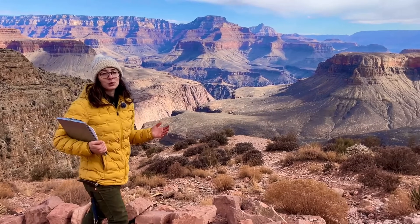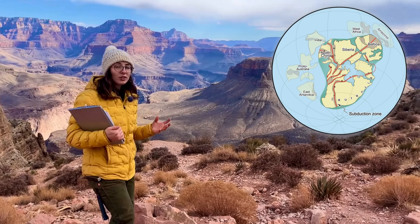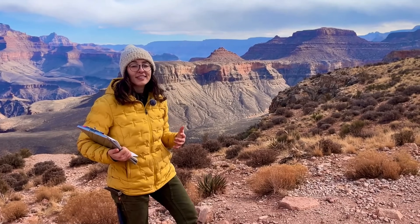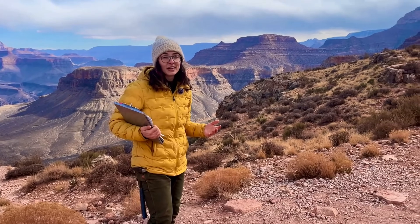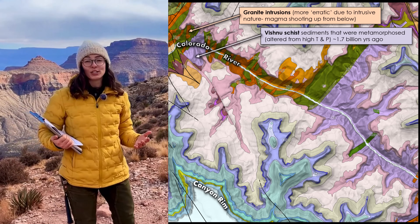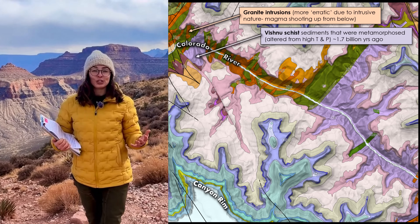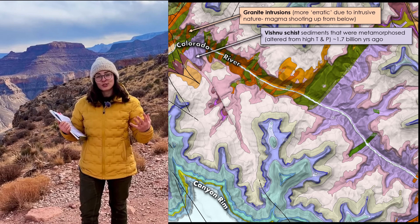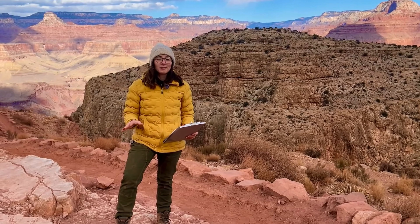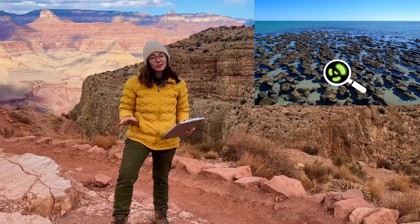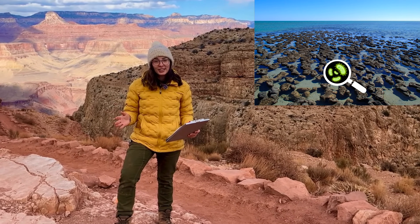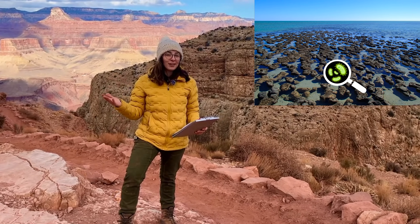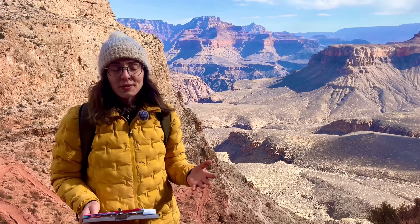At this time, Earth's land masses were coming together in one of the earliest known supercontinents called Nuna or Columbia. Colliding tectonic plates drove intense heat and pressure that formed the Vishnu Schist, while intrusions of magma from below formed the Zoroaster Granite. Life on Earth at that time was limited to single-celled organisms like cyanobacteria, which were producing oxygen, setting the stage for later animal life to evolve.